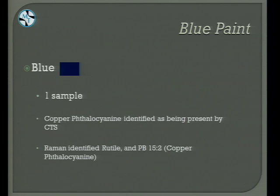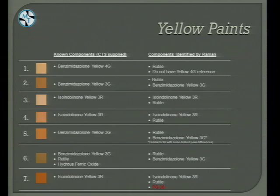The first paint was a blue paint, identified as copper phthalocyanine pigment by CTS. We also identified this as copper phthalocyanine and found rutile as well. For the yellow paints — the known components supplied by CTS are listed alongside what we found. Sometimes we did not identify the main pigment, most likely because we did not have that reference spectrum. Other times we were able to identify more than one pigment. Most notably in sample number seven, we identified two additional pigments, especially PG36, another halogenated phthalocyanine, which was unique compared to what CTS found.